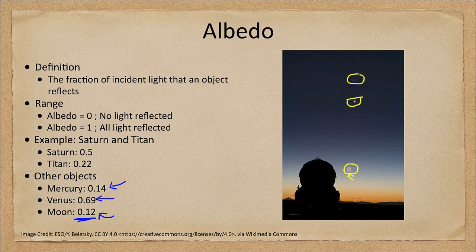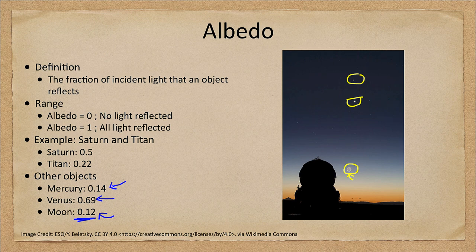The Moon is made of very dark rocks and reflects only about 12 percent of the light that strikes it. If the Moon were made of icier materials, such as some of the outer moons of the outer planets, it would be much more reflective and would be even brighter in the night sky. So albedo is how much of the light incident on an object is actually reflected off to be seen.